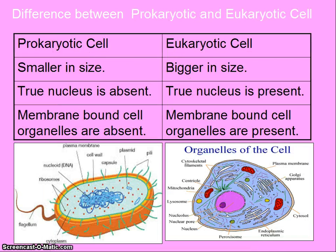Difference between prokaryotic and eukaryotic cells. Prokaryotic cells are smaller in size. In prokaryotic cells, a true nucleus is absent and nuclear material is found scattered in the cytoplasm. Membrane-bound cell organelles are also absent. In eukaryotic cells, these cells are bigger in size, a true nucleus is present, and membrane-bound cell organelles are also present.